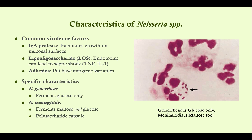Both Neisseria species share three key characteristics. First, an IgA protease, which is useful for the bacteria to grow on mucosal surfaces — Neisseria gonorrhea grows in the reproductive tract and urethra, while Neisseria meningitidis grows in the oropharynx, nasopharynx, and meninges. IgA is the antibody that helps kill bacteria on mucosal surfaces, and this IgA protease cleaves the IgA molecule, preventing it from directing the immune system to kill the organism.